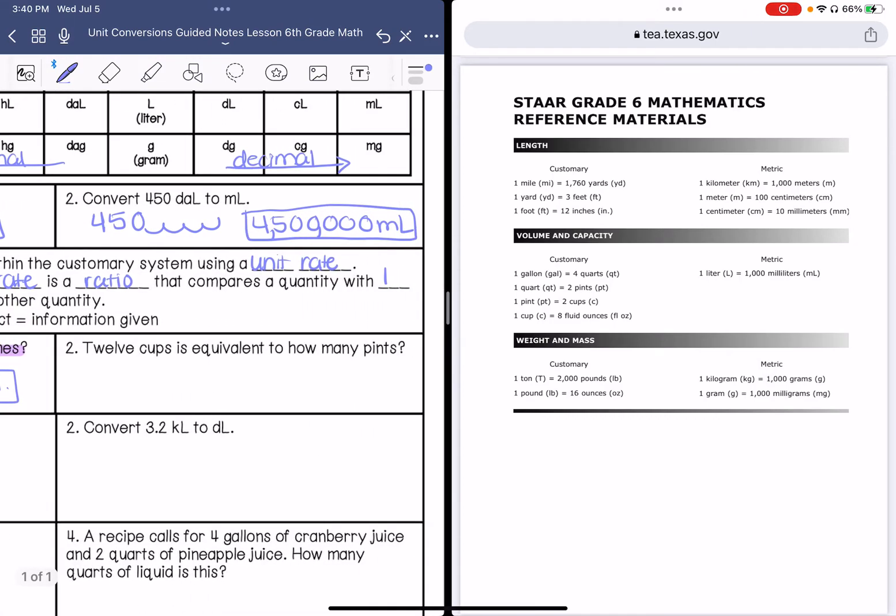Number two says 12 cups is equivalent to how many pints? So I'm doing cups and pints. My fact is that two cups is one pint, and I'm converting 12 cups to how many pints. Two times six is 12, so one times six. This is six pints.